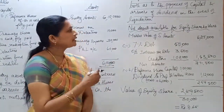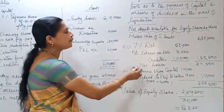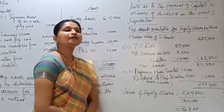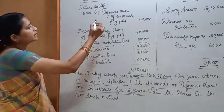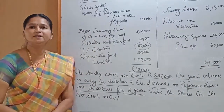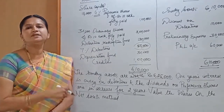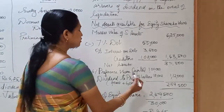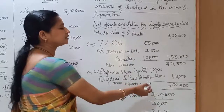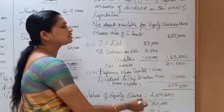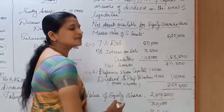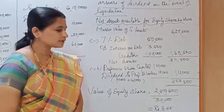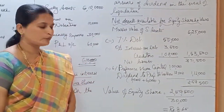In this case, preference shareholders have priority as to payment of preference capital as well as dividend. So from net assets, deduct 6% preference share capital of 1,00,000. Regarding arrears of dividend: rate of dividend is 6%, dividend for 1 year is 6,000, and 2 years' outstanding dividend comes to 12,000. Total amount payable to preference shareholders is preference share capital plus dividend = rupees 1,12,000. Deducting this from net assets 3,71,500, the balance — net assets available for equity shareholders — is 2,59,500.